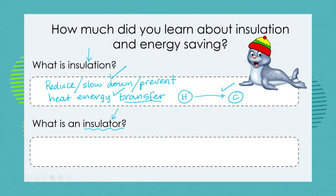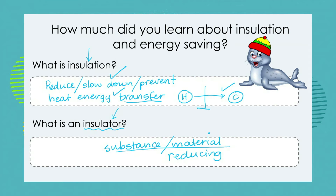If we move to what is an insulator — the insulator is the substance or material that is going to be used that does the reducing, or that is going to act as the block on this heat energy transfer. It could be a substance like air, or it could be a material like feathers. That is going to act as the insulator — the insulator is the thing that does the insulating.